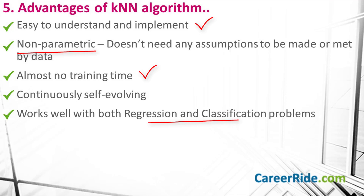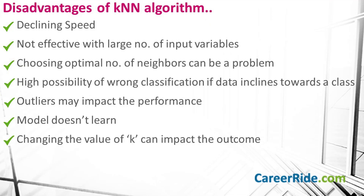Now let's look at the disadvantages of KNN. The biggest disadvantage is its declining speed — as data grows, the speed declines, and it is not effective with a large number of input variables. Choosing the optimal number of neighbors while classifying a new entry is another problem. If your data inclines towards a particular class, there is a high possibility of a new entry being classified wrongly. Outliers may also affect performance since classification is based on distance. The model doesn't learn anything from training data — it just uses it to classify data in actual situations. And changing the value of K can change the predicted class variable.